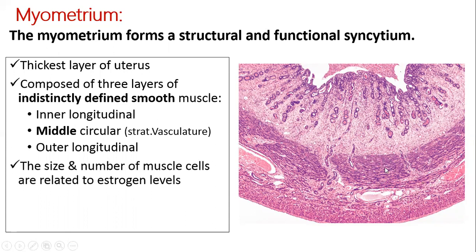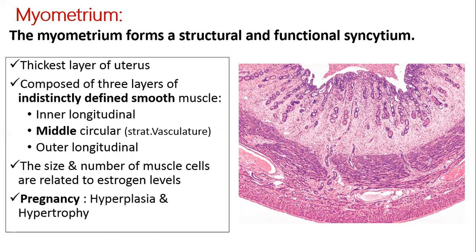The outer and inner layers have longitudinally arranged fibers. The middle layer is circularly arranged and contains lots of blood vessels, so it is called the stratum muscularis. It is the thickest layer and has interlaced smooth muscle fibers in a circular or spiral pattern. The size and number of muscle cells are related to estrogen levels — in pregnancy there will be more estrogen, causing hyperplasia and hypertrophy of these smooth muscle fibers.